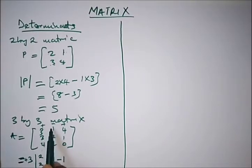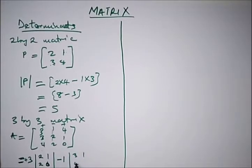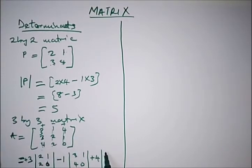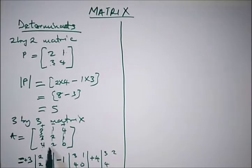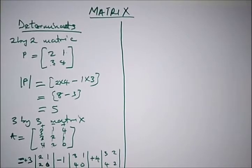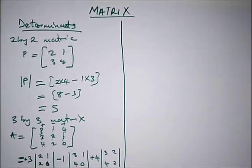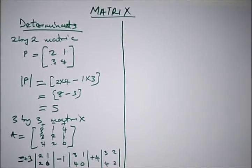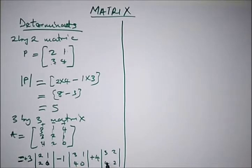Then minus 3 — canceling row and column — gives us [1, 2; 4, 0], and plus 4 — canceling row and column — gives us [1, 2; 4, 1]. So we have: 3 times (2×0 minus 2×1), which is 3 times (0 minus 2); minus 1 times (1×0 minus 4×2), which is minus 1 times (0 minus 8); plus 4 times (1×1 minus 4×2), which is 4 times (1 minus 8).